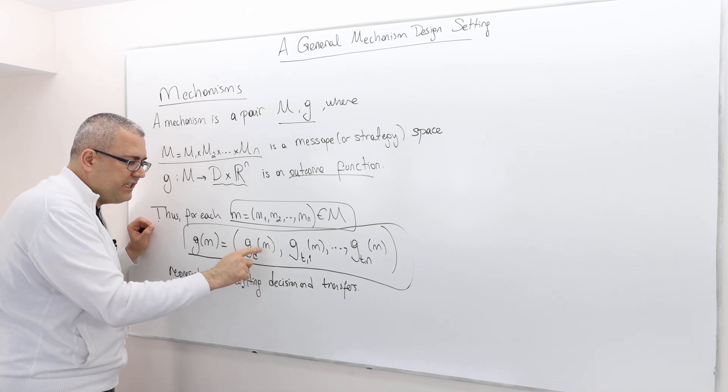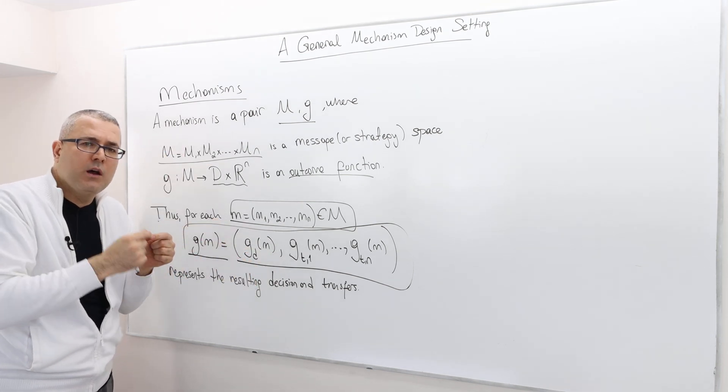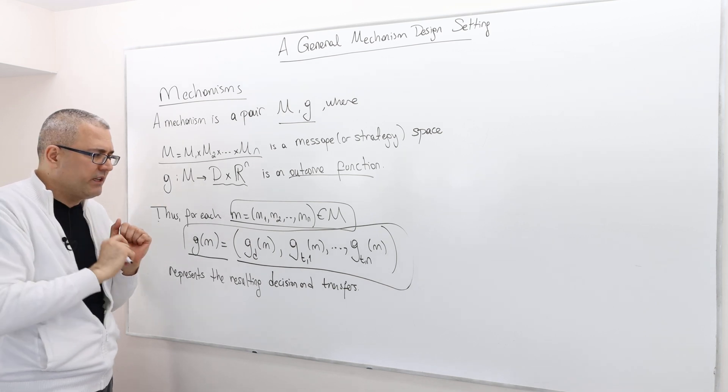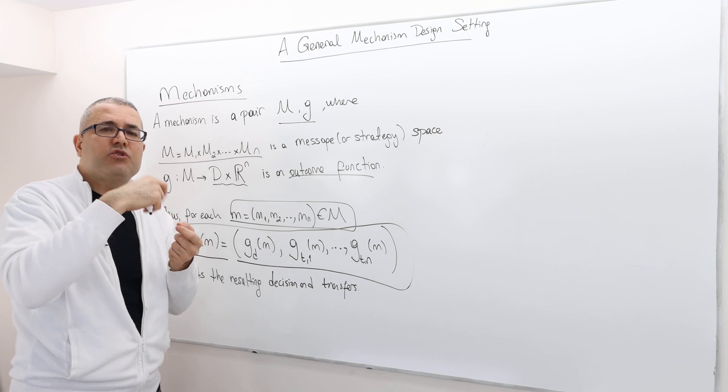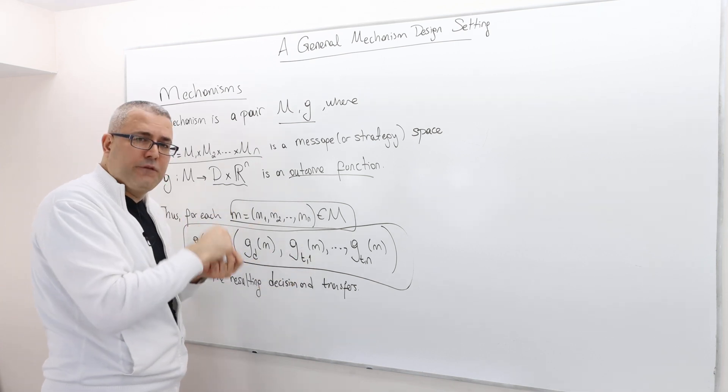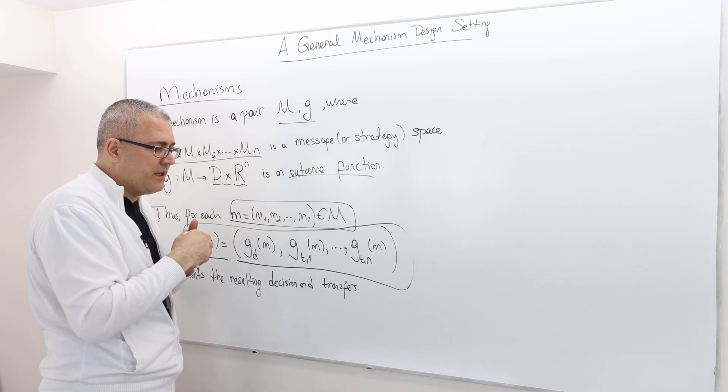The first component is G_D(M), which is what is the social outcome once the message M is realized. And this is G_T1, what is the transfer of the first individual once the message M is realized.